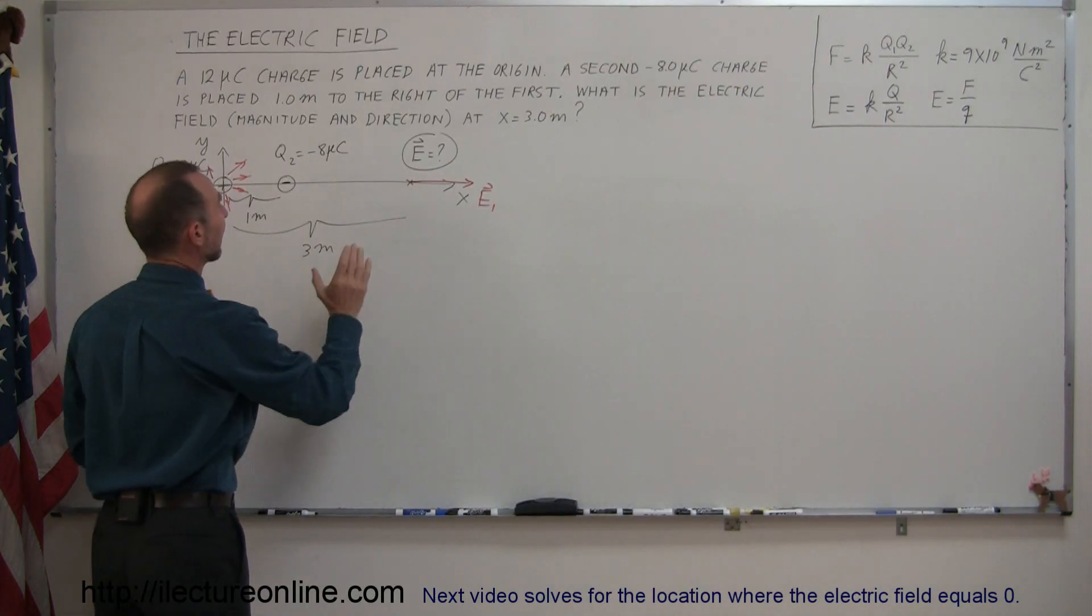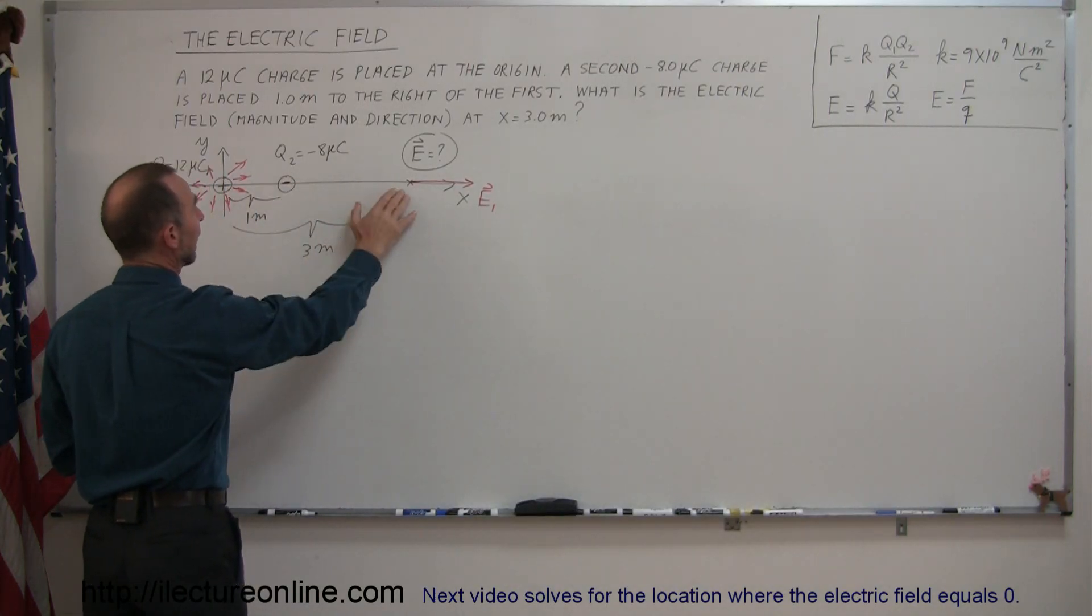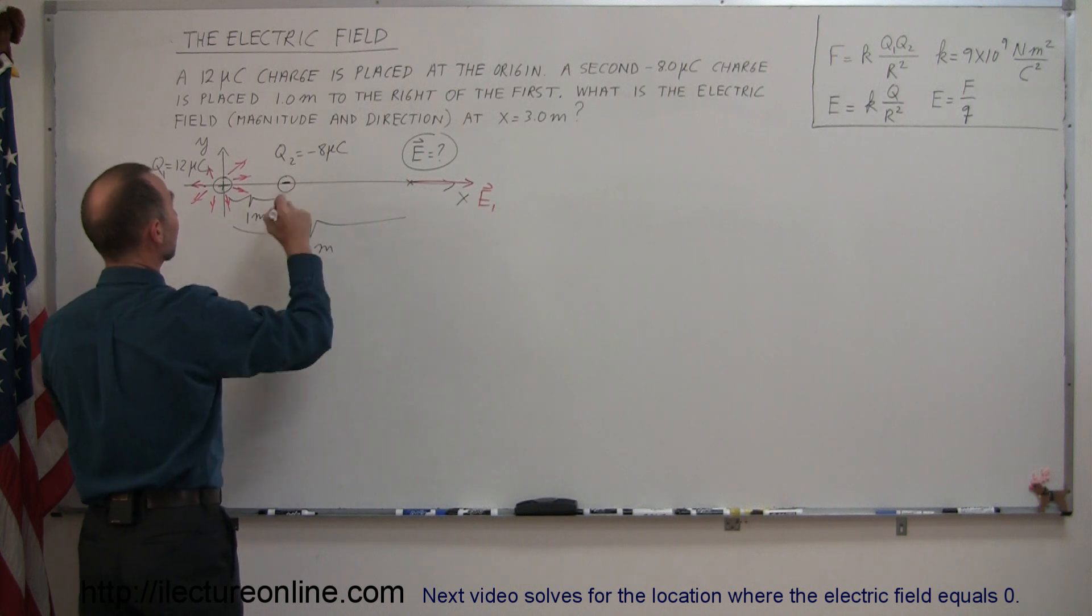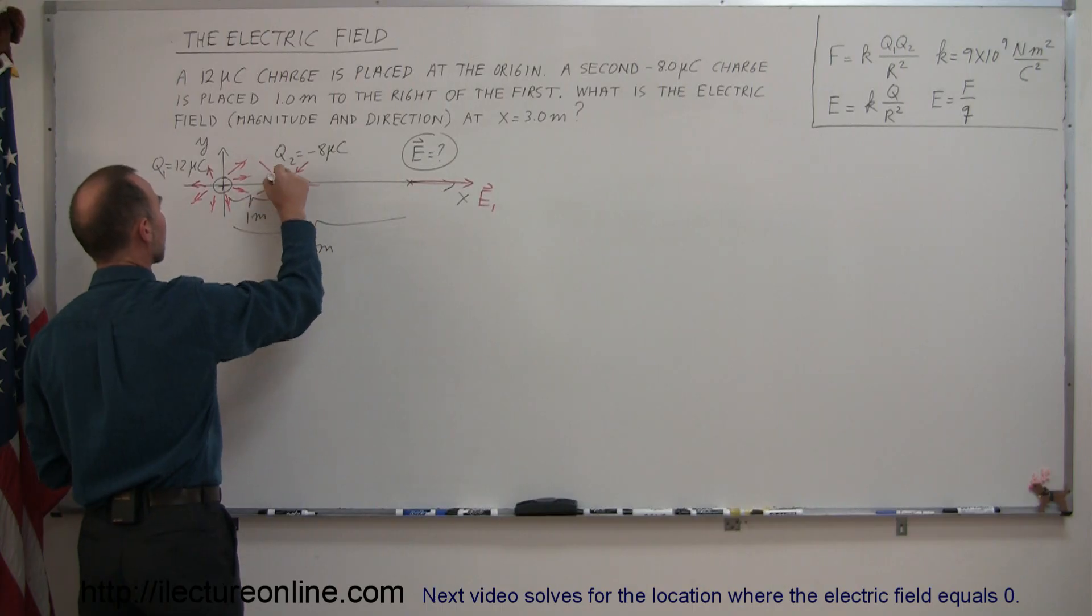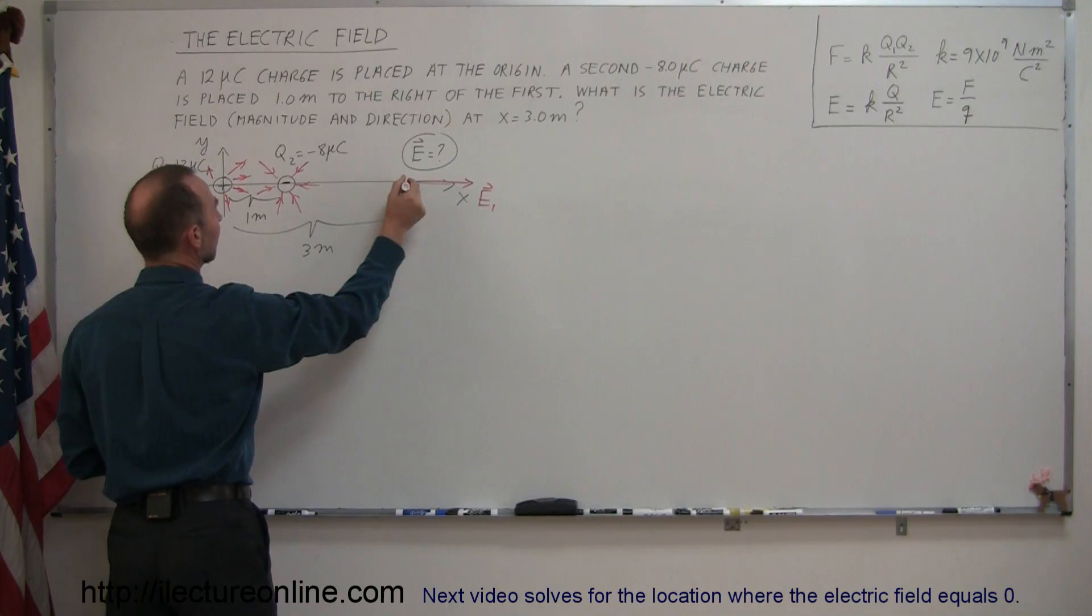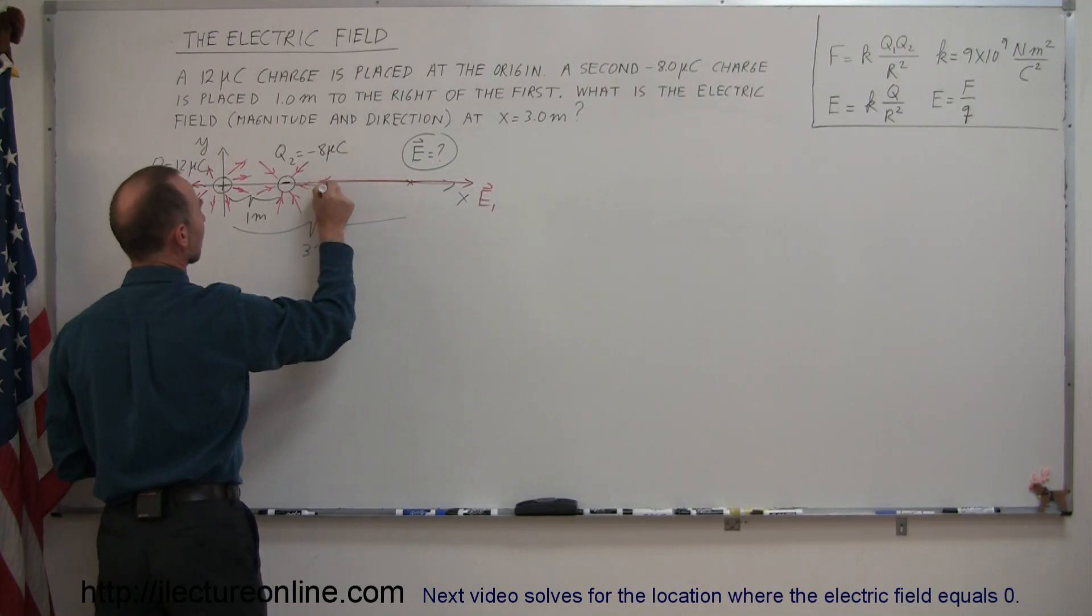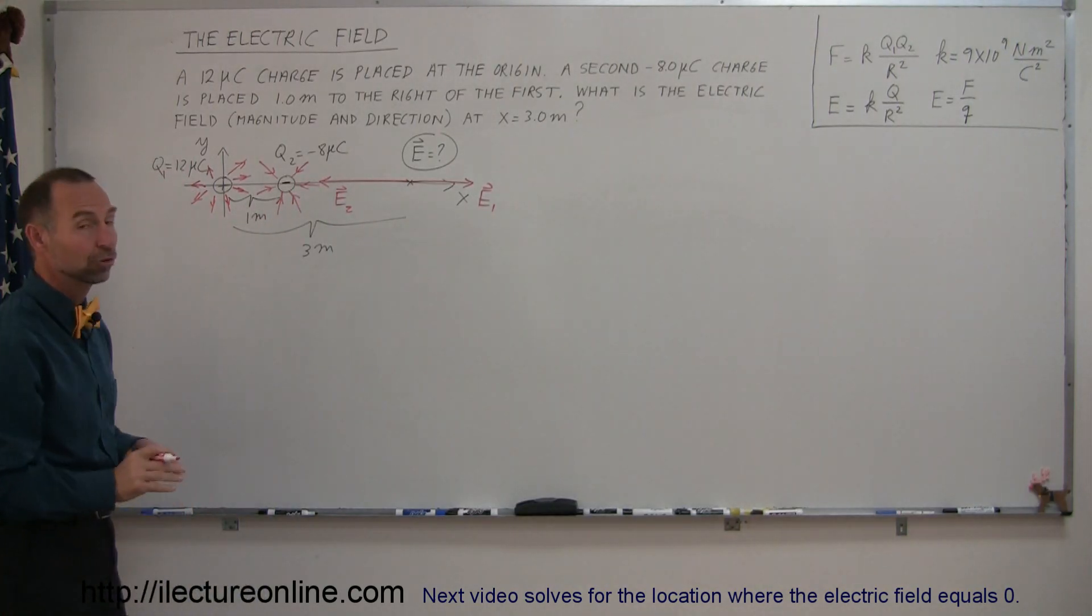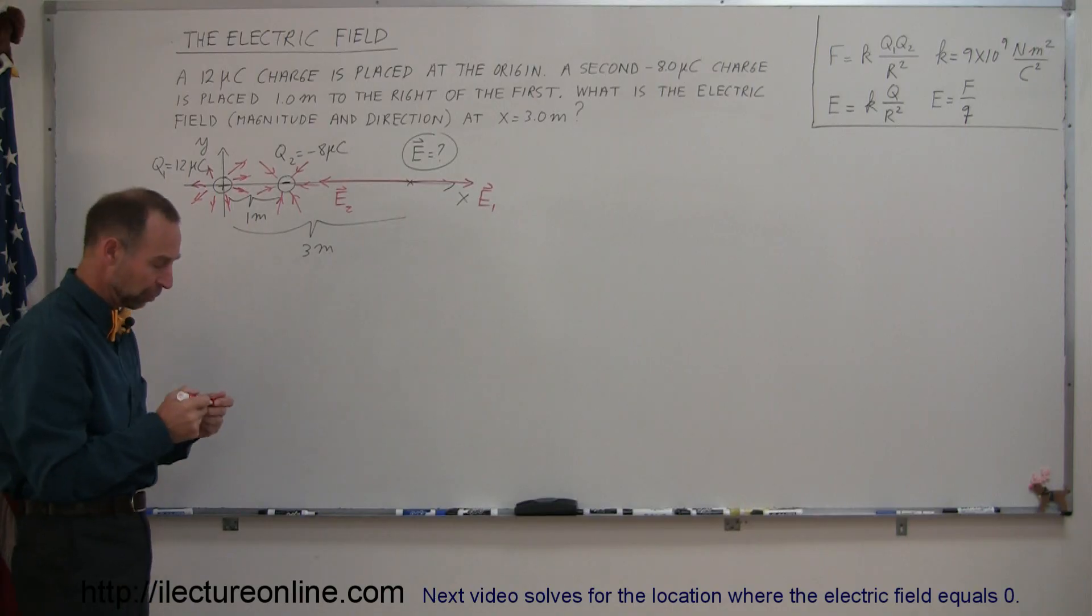So I would assume the electric field strength due to this charge will be a little bit bigger and it's pointing in the opposite direction because for negative charges, the electric field emanates towards the charge. So I would expect over here there would be an electric field in this direction, E2, meaning due to charge 2, and I assume that would be bigger than E1.